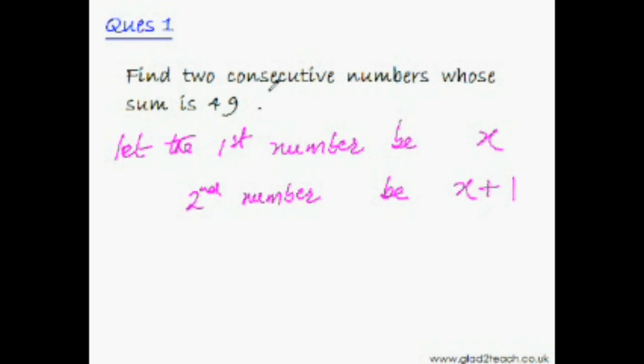That is how we translate the English word consecutive into mathematics. Consecutive means one after the other. If one number is 7, then the other would be 7 plus 1, that is 8. So according to this question, the sum of x and x plus 1 should be 49.